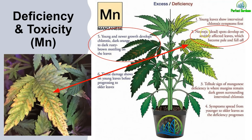It says necrotic spots develop on several affected leaves, which become pale and fall off. I want to be clear on spots — dead spots, pale and fall off. When it's in excess, younger and newer growth develops chronic dark orange to dark rusty brown mottling on the leaves.